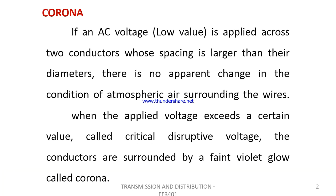If an AC voltage is applied across two conductors whose spacing is larger than their diameters, there is no apparent change in the condition of atmospheric air surrounding the wire. But when the applied voltage exceeds a certain value called critical disruptive voltage, the conductors are surrounded by a faint violet glow with a hissing noise called Corona. This is Corona discharge.